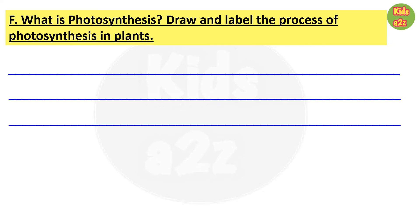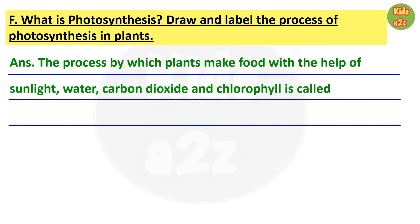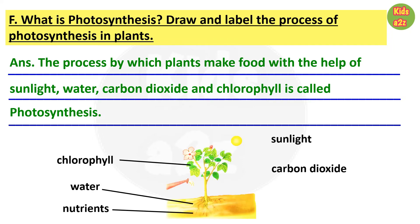Draw and label the process of photosynthesis in plants. Answer: the process by which plants make food with the help of sunlight, water, carbon dioxide, and chlorophyll is called photosynthesis. For the diagram part, kids can draw accordingly. A video on photosynthesis has already been uploaded — the link will be in the description box and the info button for better understanding.